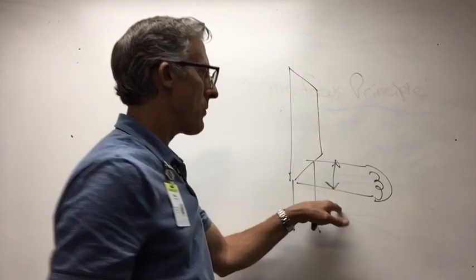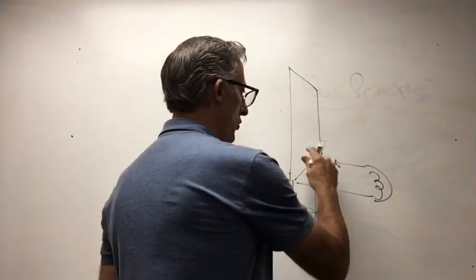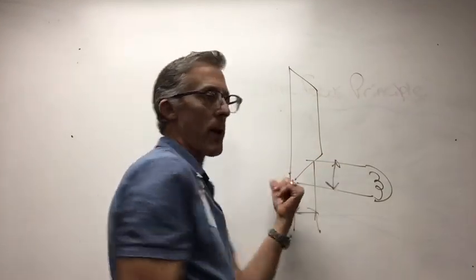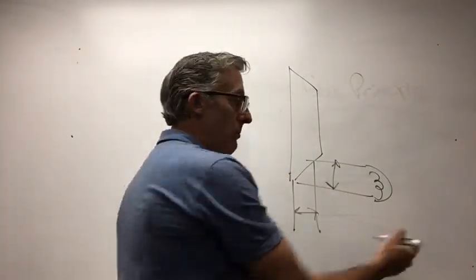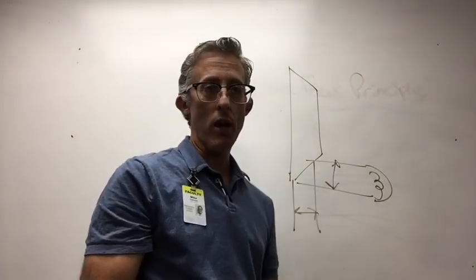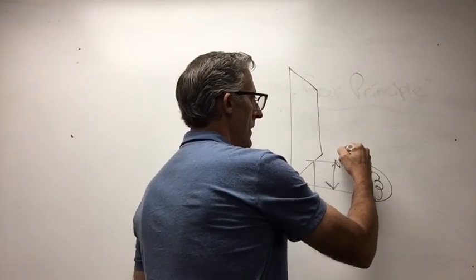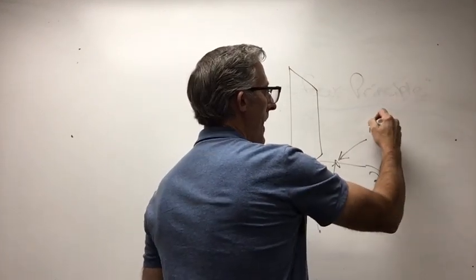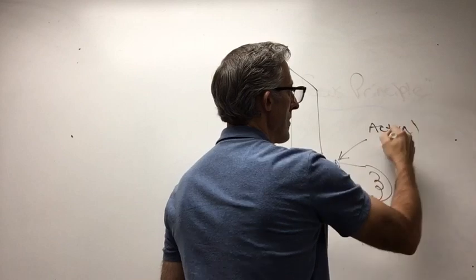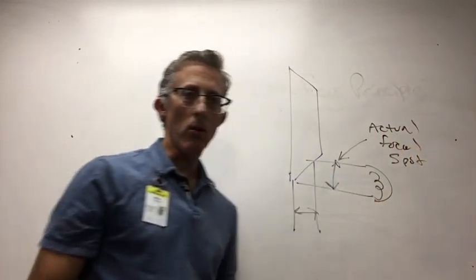So we refer to this in radiography lingo as the actual focal spot. That is the area that's impacted by this electron cloud moving, by the way, unidirectionally with DC voltage driving that current across the x-ray tube from cathode to anode. So once again, we're going to label this the actual focal spot.